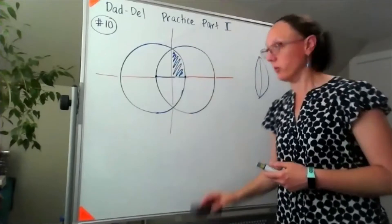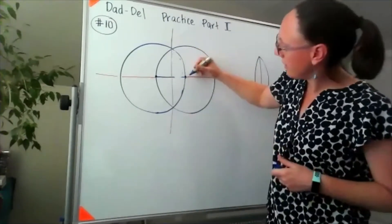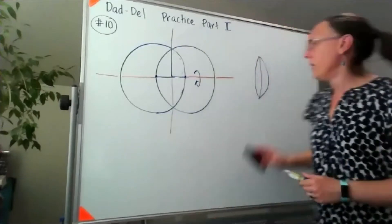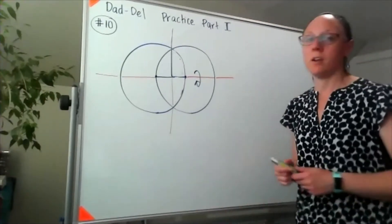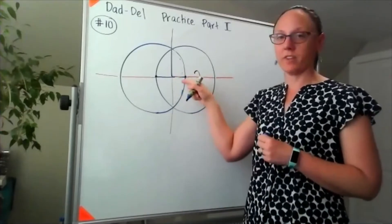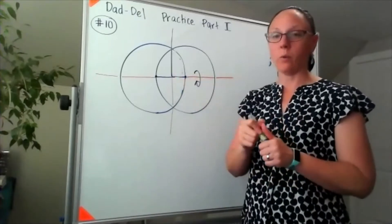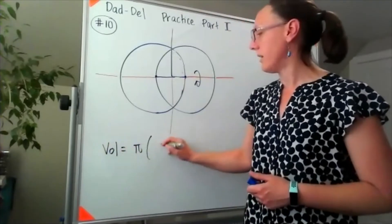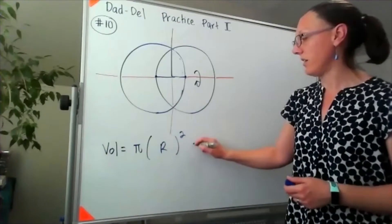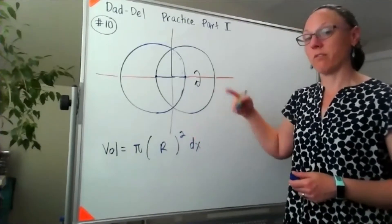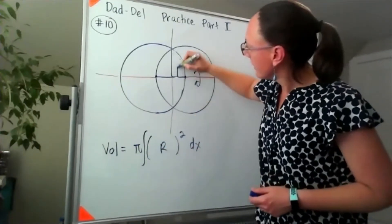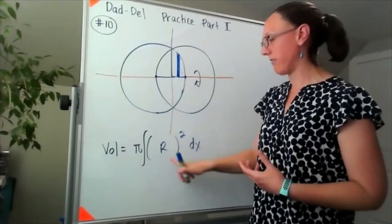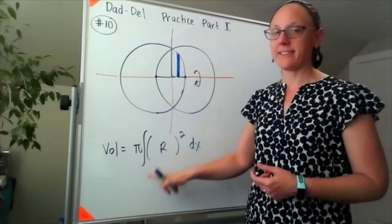I'm going to take that region in blue and revolve it around the x-axis. Because I'm revolving around something that touches one of the edges, when I go to write the volume it will be solid — it won't have that hollowed-out part in the middle. That means our volume would just be π times whatever our radius is squared times dx, because I'm revolving around the x-axis. That's my arbitrary cross-section. Now I just have to figure out an expression for that radius and figure out what our bounds will be.